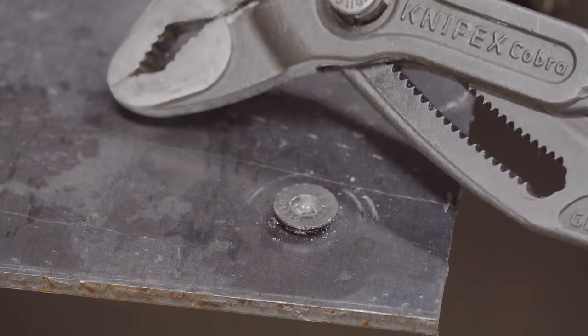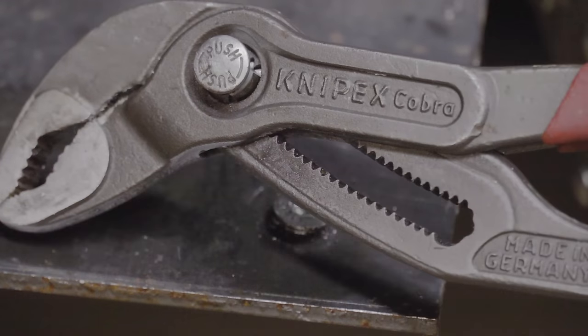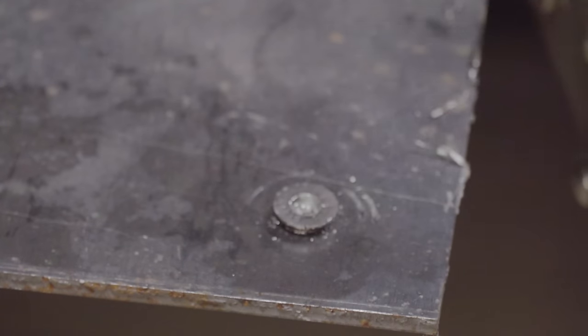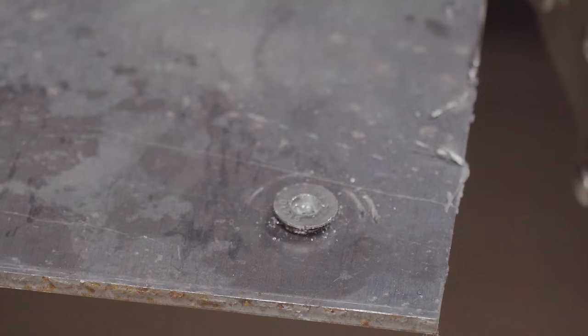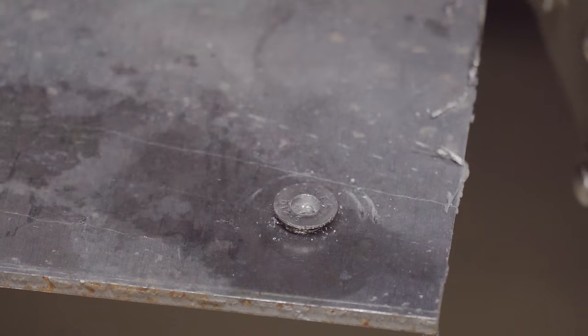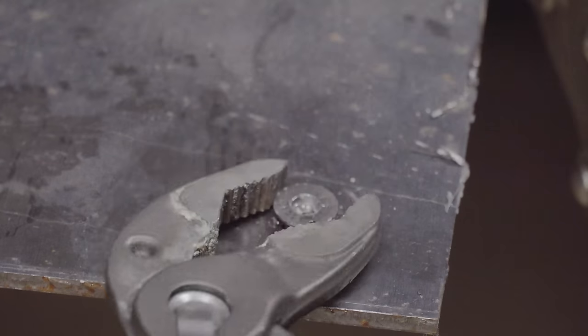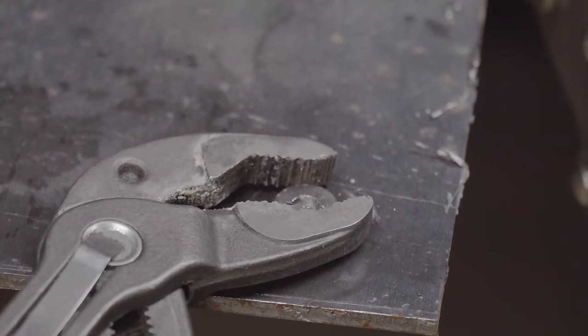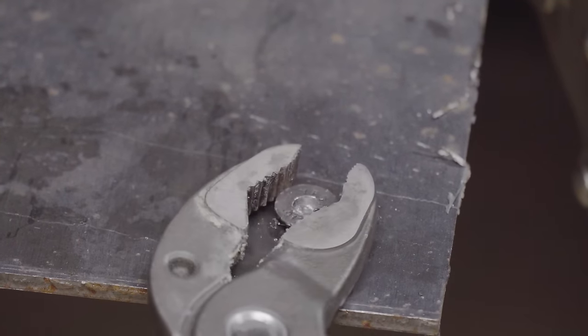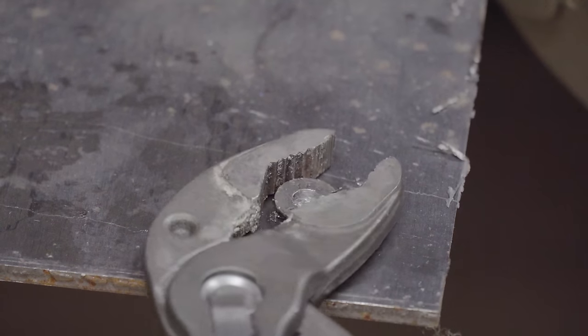If you have a pair of vice grips or these Cobra pliers, these right here are going to be your best bet to remove them. They're not very expensive at all. Let me show you—all you have to do is get a hold of it, grip, and turn.